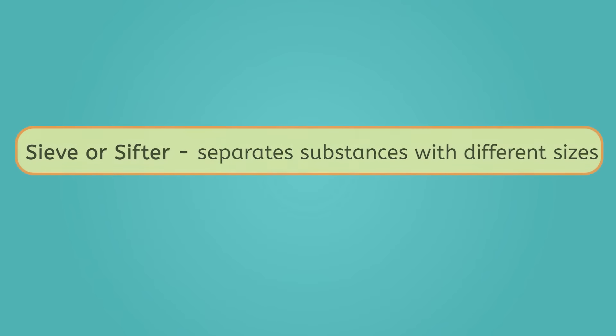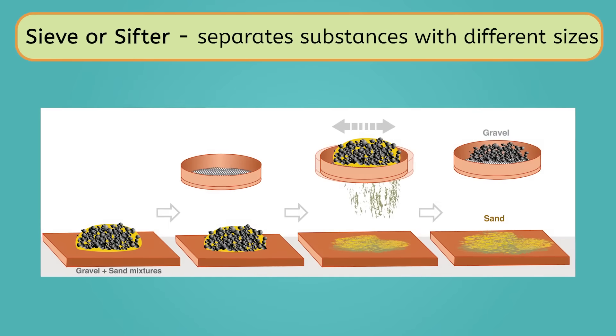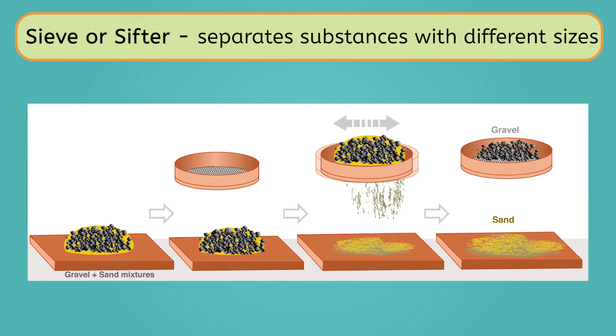For instance, if substances in a mixture are different sizes, we can use a sieve or a sifter to separate them. Like with this mixture of sand and gravel. The small pieces of sand will fall through the holes, and the larger pieces of gravel don't, separating the two.